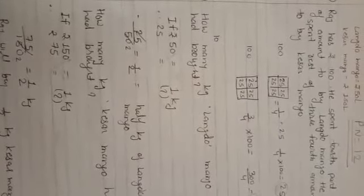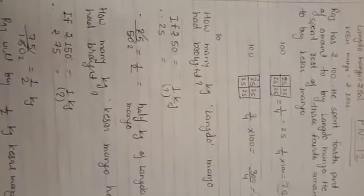Raj has 100 rupees. He spent one-fourth of the amount to buy long mango. He spent the rest, three-fourths of the amount, to buy Kesar mango. What is one-fourth of 100? One-fourth of 100 is 25, and three-fourths of 100 is 75.